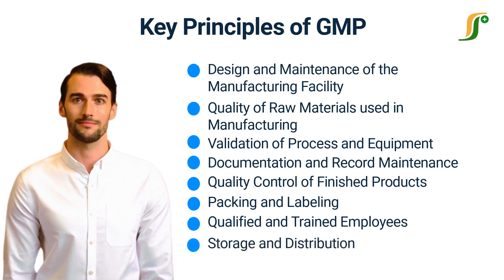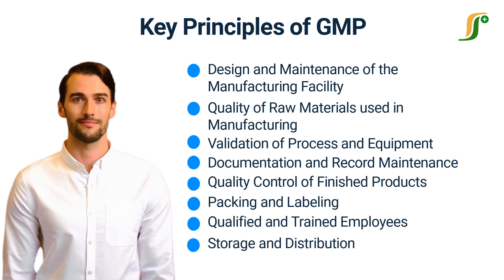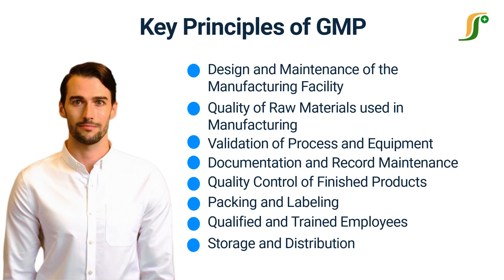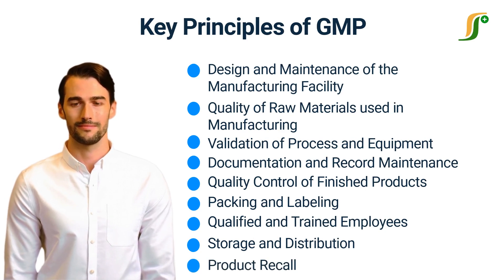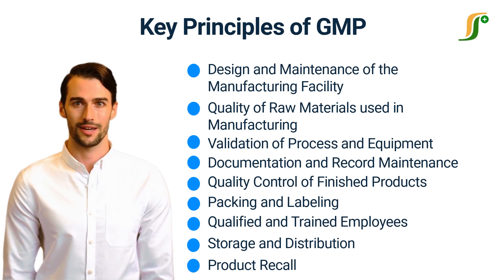The eighth principle is storage and distribution. Pharmaceutical products produced in a GMP facility must be stored and distributed in a way that ensures product safety and quality. The ninth and last principle is product recall. If any issues are found in product quality, then manufacturers must have procedures for product recall and investigation.